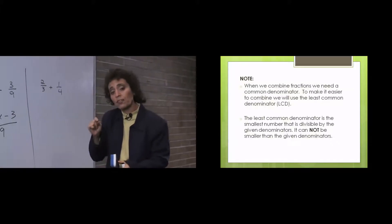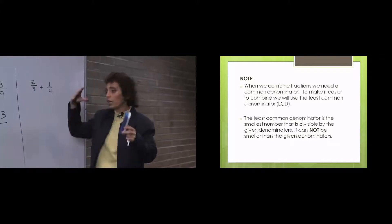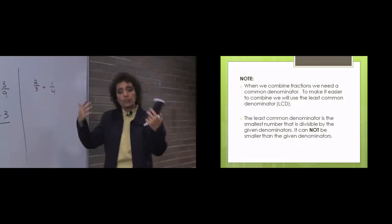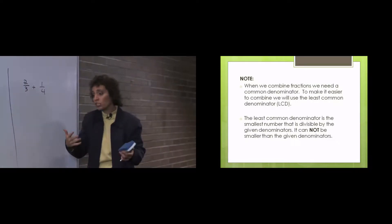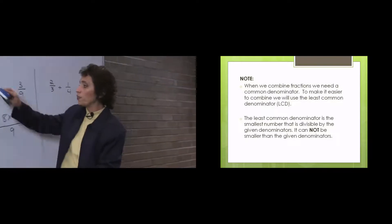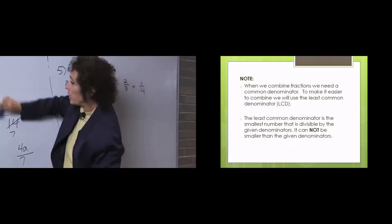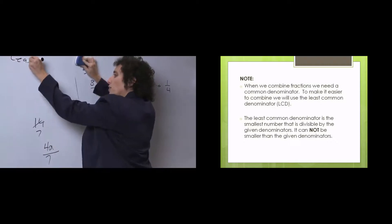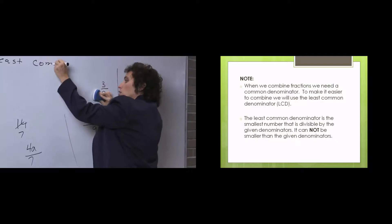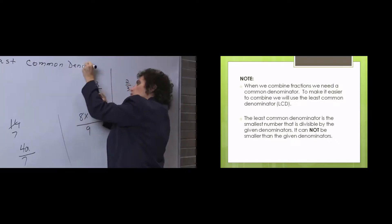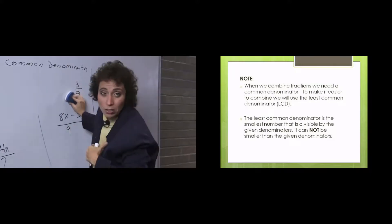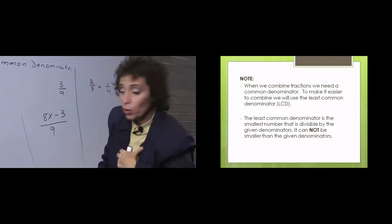In order for them to have the same denominator, we need to build them so they'll have the same denominator. If we build them, we multiply them by some number to be an equivalent fraction. We've got to figure out what that number's going to be. So I want to talk about the least common denominator. I want to do this a little differently than you've probably ever seen it done. I'm a minimalist — I don't like to do a lot of stuff.